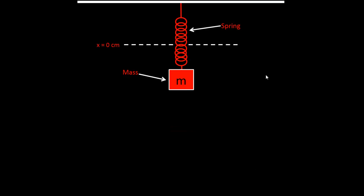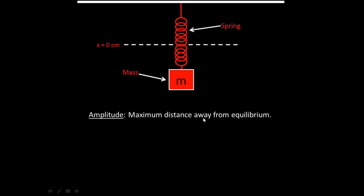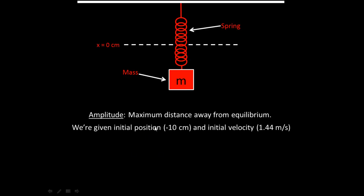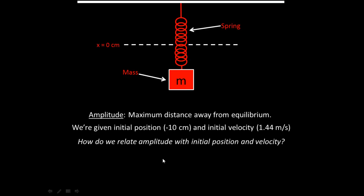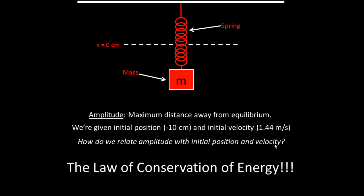Amplitude is the maximum distance away from equilibrium. We know the initial position is negative 10 centimeters and the initial velocity is 1.44 meters per second. The key question is how to relate amplitude with initial position and velocity — and the answer is the law of conservation of energy.